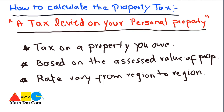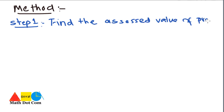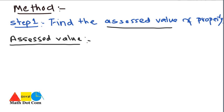Let's see how you can calculate the property tax step by step. Step 1 is to find the assessed value of the property. The assessed value is basically the yearly estimation that is performed to calculate the tax on your property.